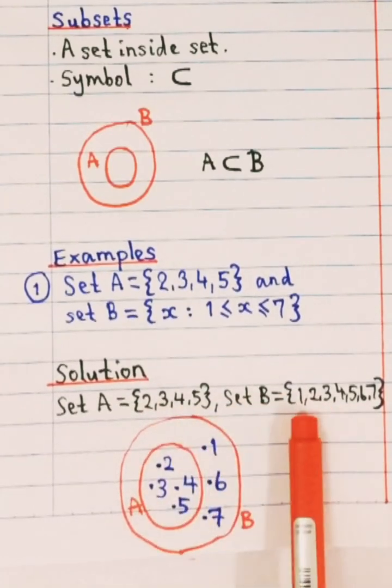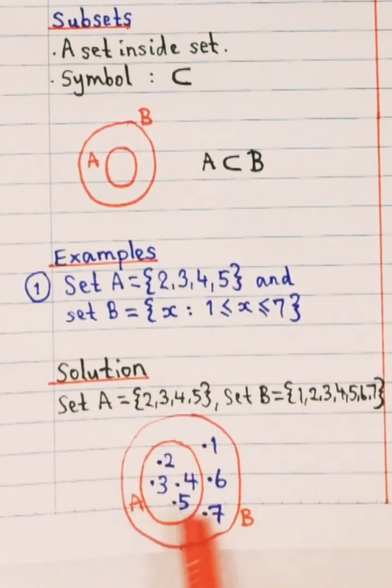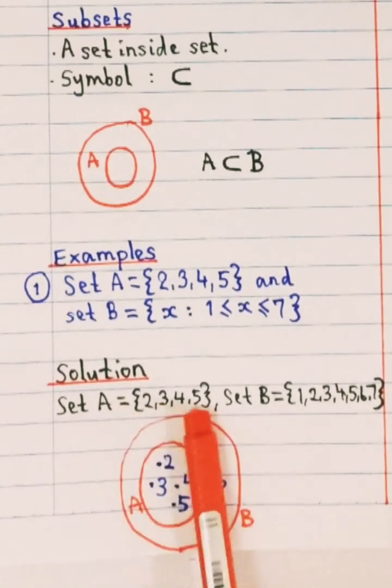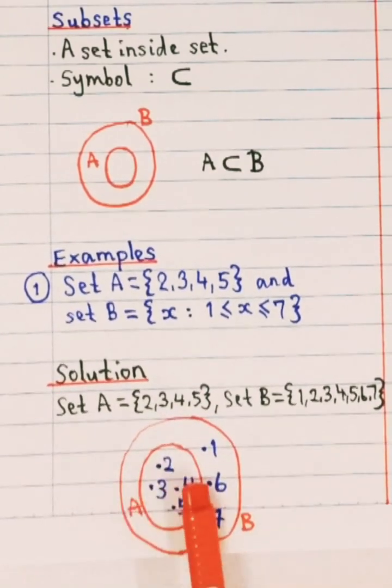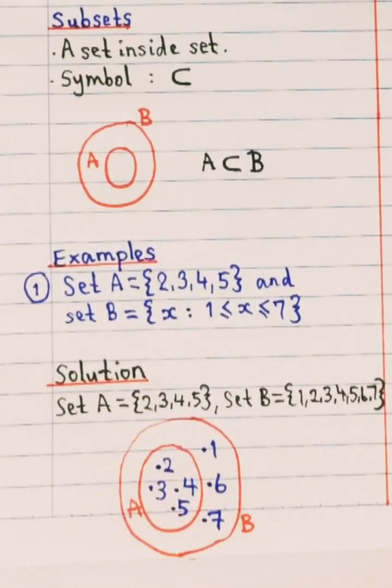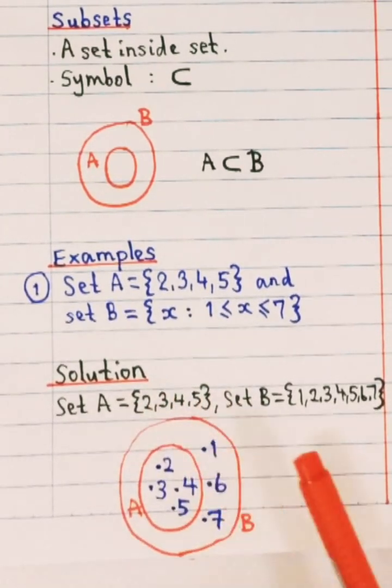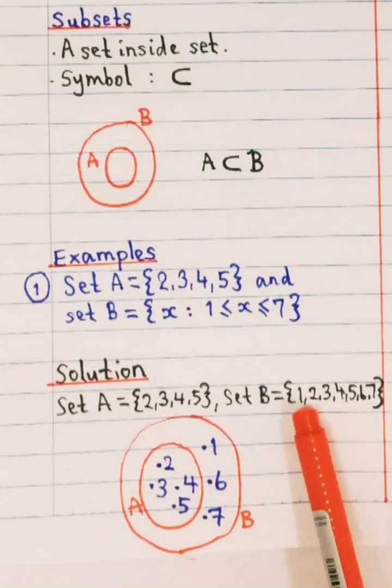So this is your set B. So now because your set A is inside set B, you have 2, 3, 4, 5 here. So you're gonna draw your A first. And then you label 2, 3, 4 and 5. Dot 2, dot 3, dot 4 and dot 5. And then you draw another circle to represent your set B.